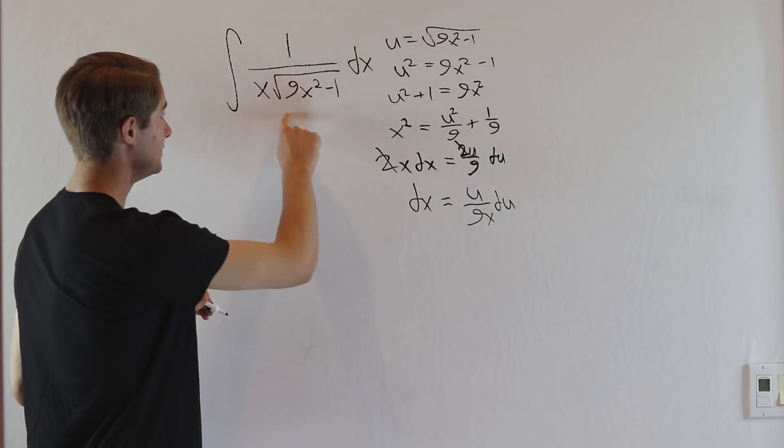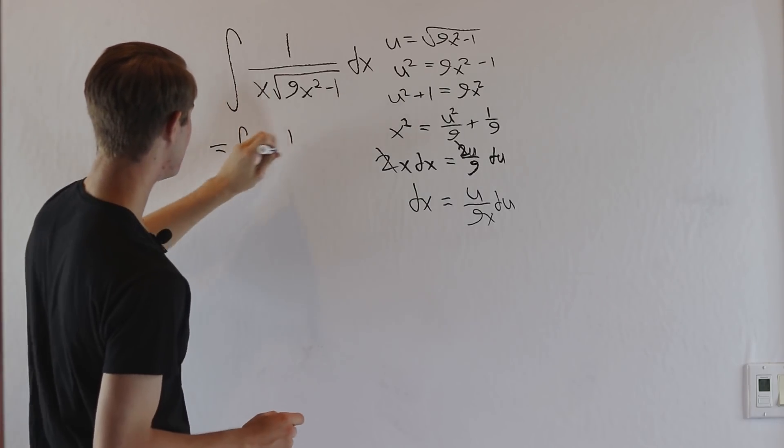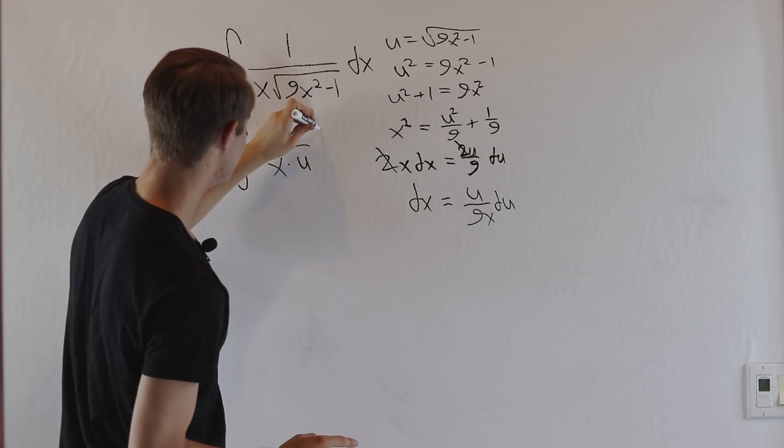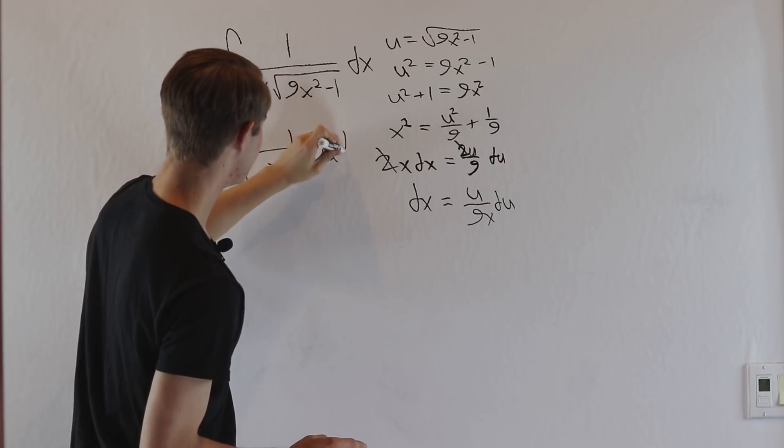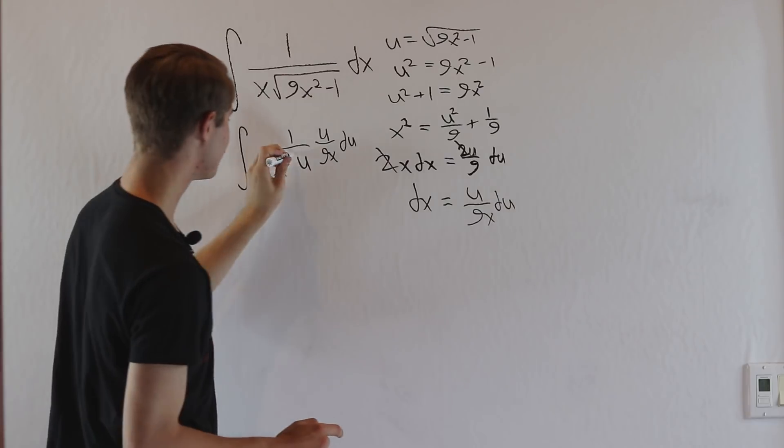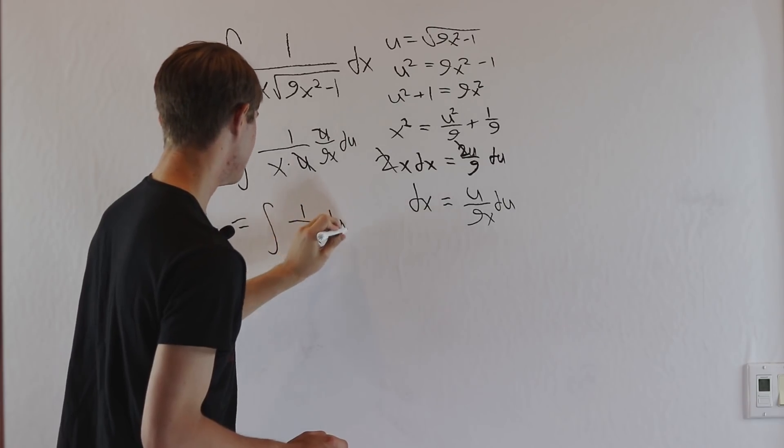And now we have all the information we need to go back to our integral right here. So we get the integral of 1 over x times, and this square root is u. Then dx becomes u over 9x du. And we immediately see a u on the top and a u on the bottom, so that's nice to cancel. And we get the integral of 1 over 9x squared du.